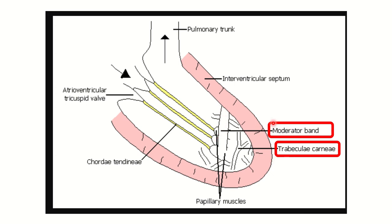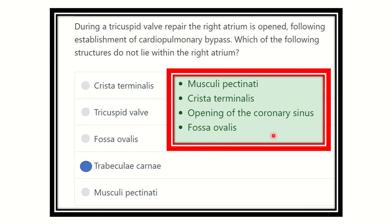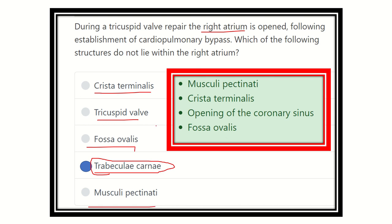Therefore, the trabeculae carneae is located in the right ventricle, not the right atrium. Structures such as the crista terminalis — which is the junction between the rough and smooth parts — the tricuspid valve, fossa ovalis, and musculi pectinati are all located in the right atrium. The trabeculae carneae is specific to the right ventricle, making it the correct answer. Thank you all.